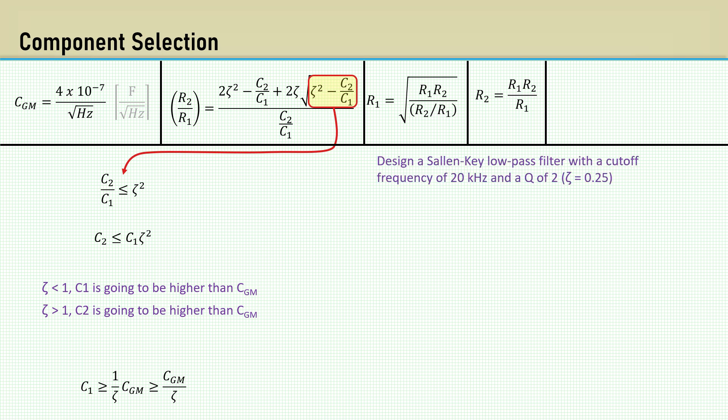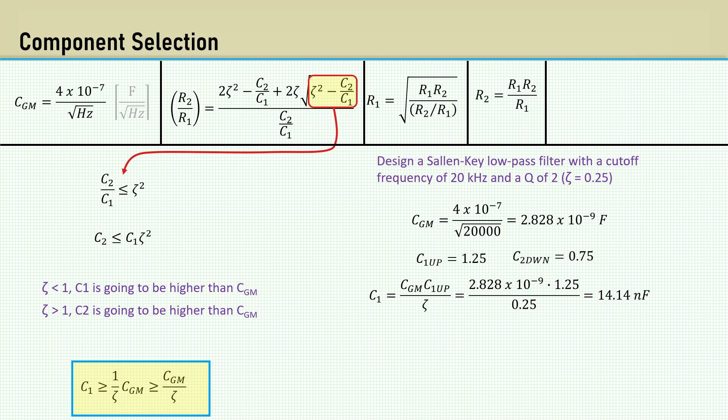Let's design a Salen-Key low-pass filter with a cutoff frequency of 20 kHz and a Q of 2, which is a damping factor of 0.25. Establish the geometric mean of capacitance by dividing by the square root of the cutoff frequency. We need to make sure C1 doesn't round down to a standard value and make sure C2 doesn't round up to a standard value. So we can have a C1 upscale factor, which can be tweaked to adjust the capacitor selections. I'm using 1.25 in this example and 0.75 for the C2 downscaling factor. Now let's calculate C1, which comes out to 14.14 nanofarads. I'll select an E24 series standard value of 15 nanofarads.